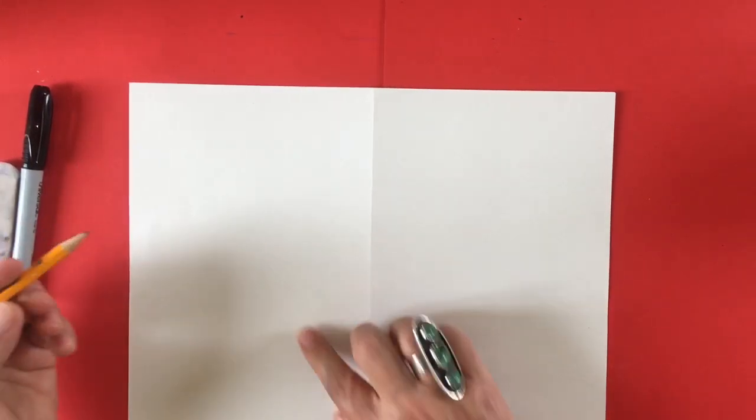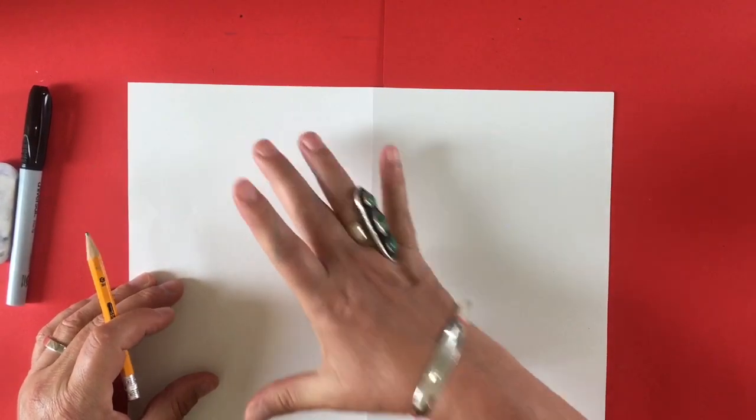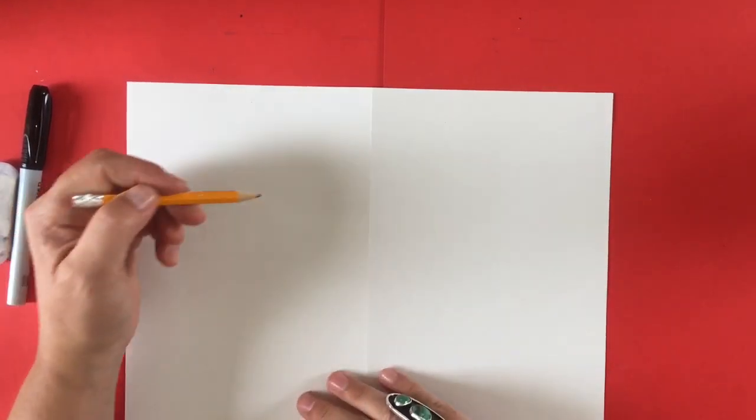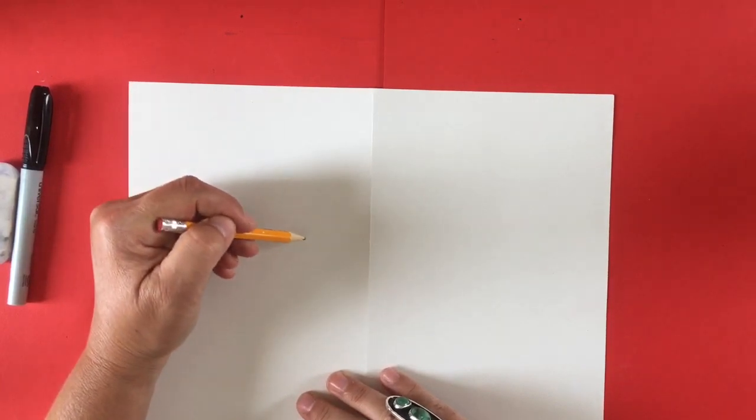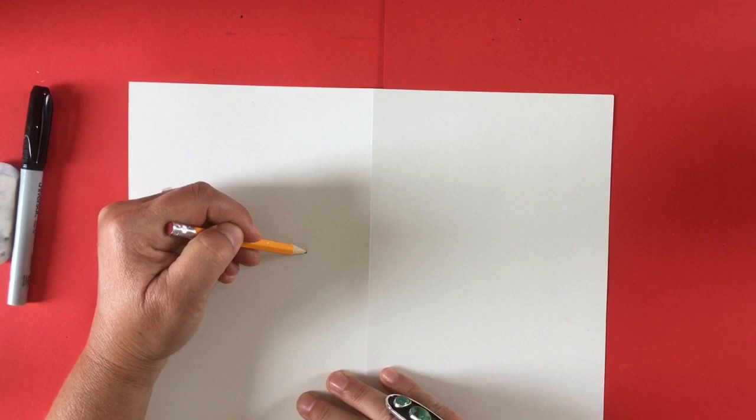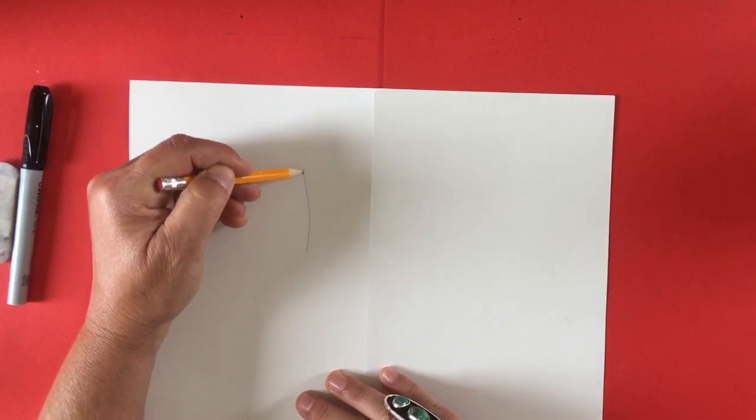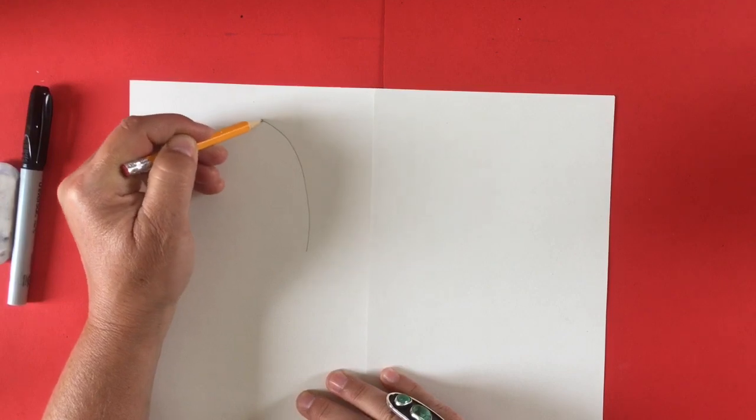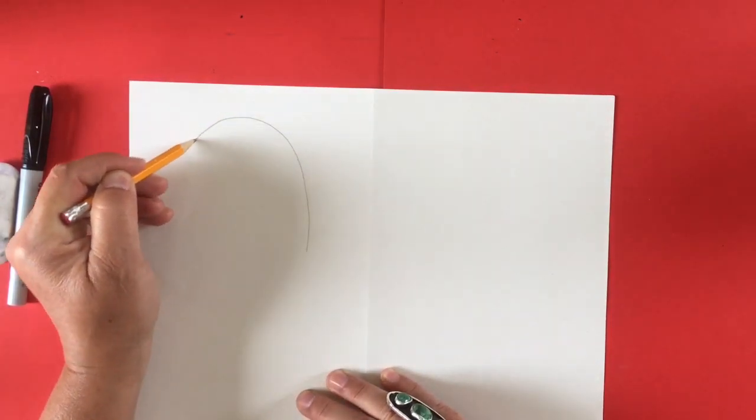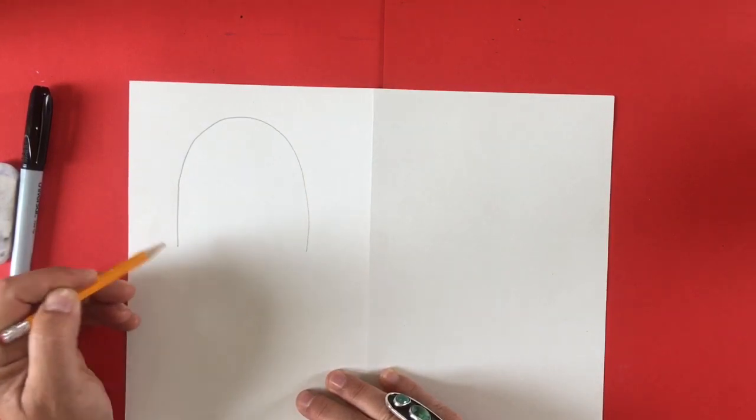The first shape you're going to make, kind of at the top of the paper, not too far up, but about an inch down, you're going to draw a big hill. Kind of like an upside down U shape from the center of the paper going up and giving yourself a little room at the top and coming back down. This will be the top of our popsicle.